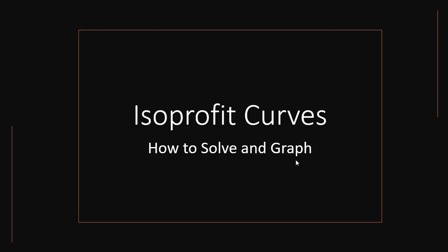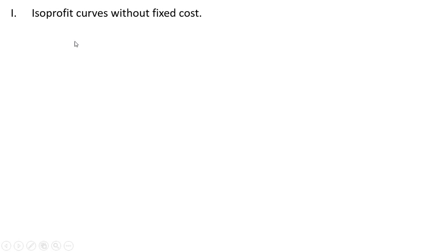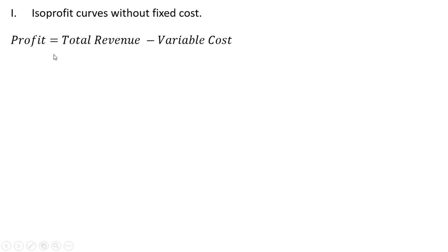In this video, we're going to look at isoprofit curves and see how to solve them and graph them. We're going to start with isoprofit curves where we have no fixed cost. So in this case, without fixed cost, profit is total revenue minus variable cost, where profit is price times quantity minus the wage times labor, labor being the variable input.